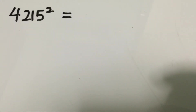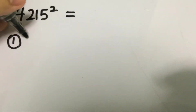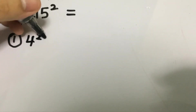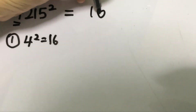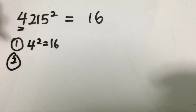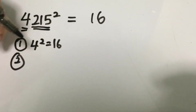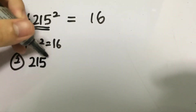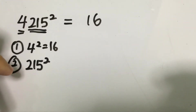The next example is to solve 4215 squared. The first thing you need to do is square the first digit, which is 4. So 4 squared gives you 16 — those are the first two digits. The next step is to square the last three digits, which is 215. So we need to calculate 215 squared.